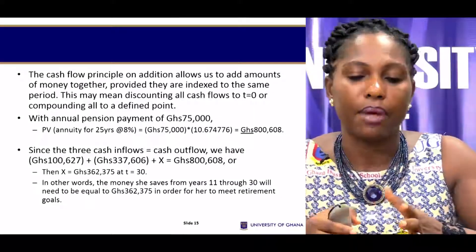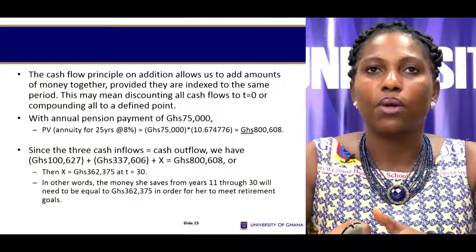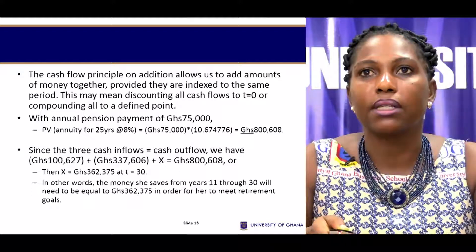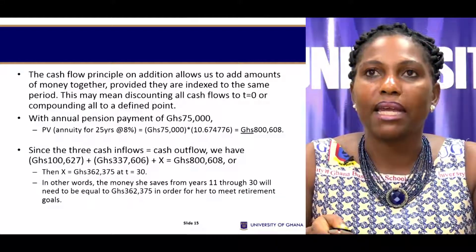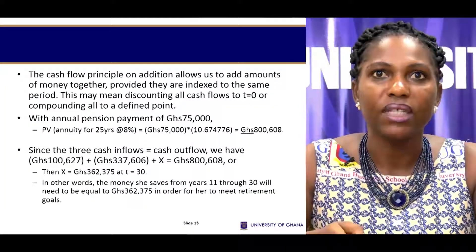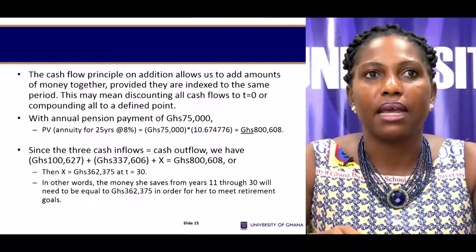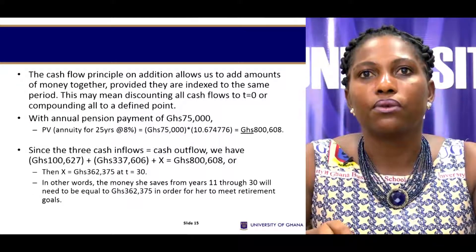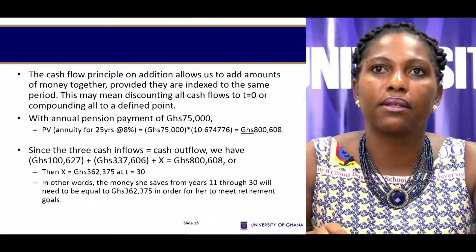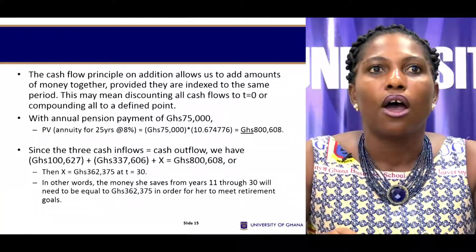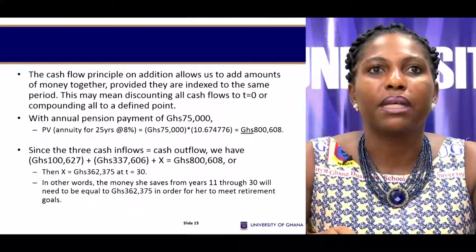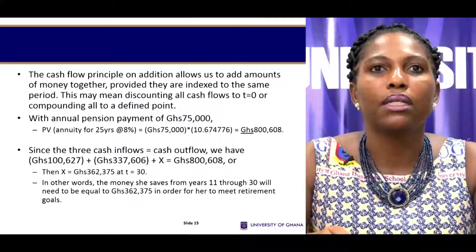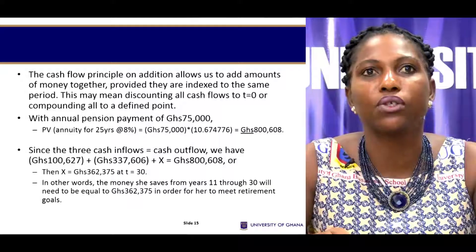First, we determine the present value of her annual pension income of $75,000 for 25 years at 8%. This tells us that when she goes on retirement she must have an estimated amount of $800,608 in her account. All three cash flows — her initial $10,000, her $5,000 annual contributions, and the unknown amount she will contribute from years 11 through 30 — must add up to $800,608. The intrinsic shortfall at time t=30 is $362,375, meaning her savings from years 11 to 30 must equal $362,375.